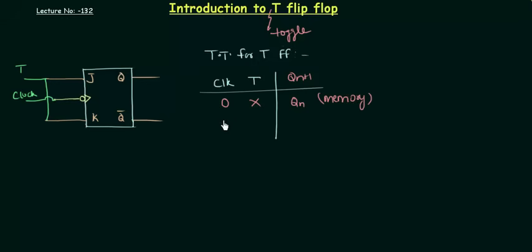When the clock is high and T is low, it means again we are having memory because in this particular case we are having J as 0 and K as 0. Whenever this happens, we have the memory. It means whatever be the previous state is stored, and Qn+1 equals Qn. So again we are having memory state in this case.